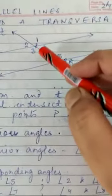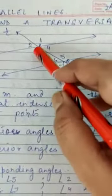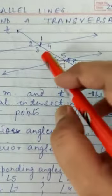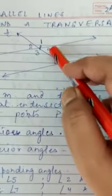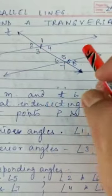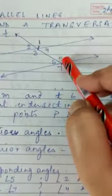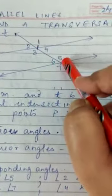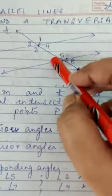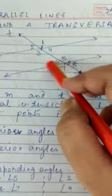Similarly, the alternate interior angles are among 3, 4, 5, and 6. So, angles 3, 4, 5, and 6 are the alternate interior angles.